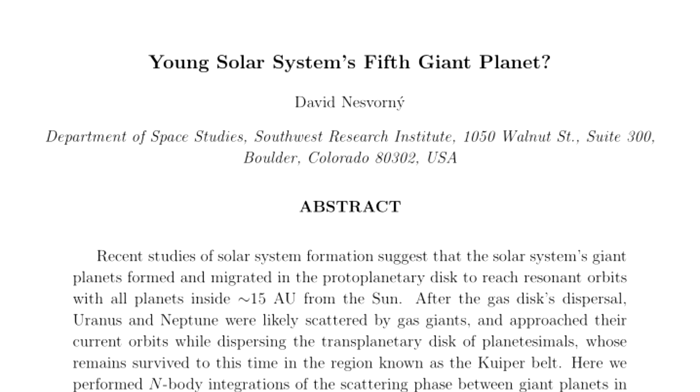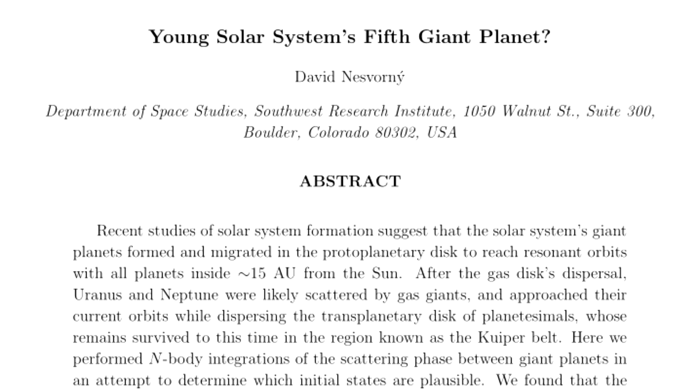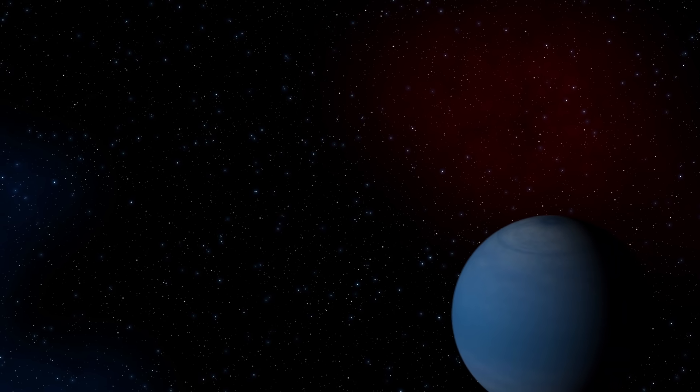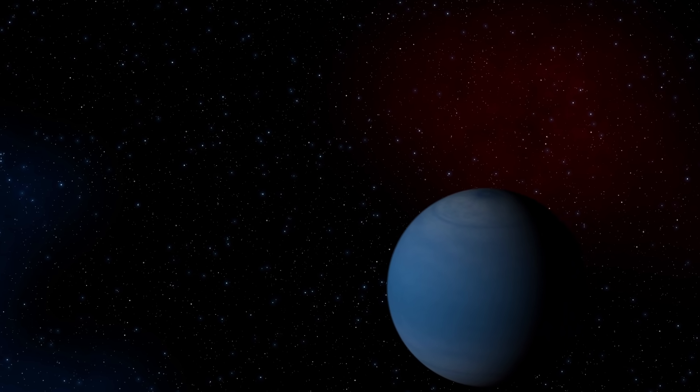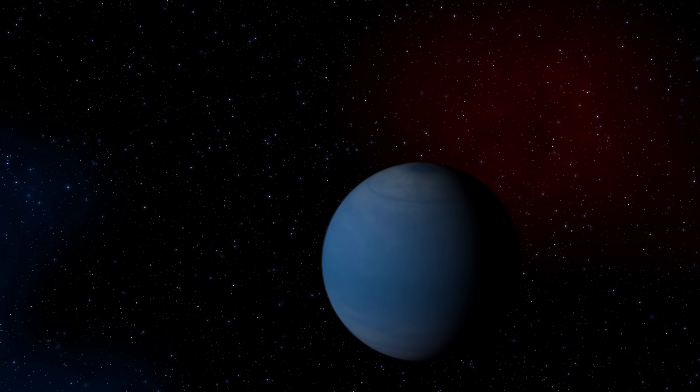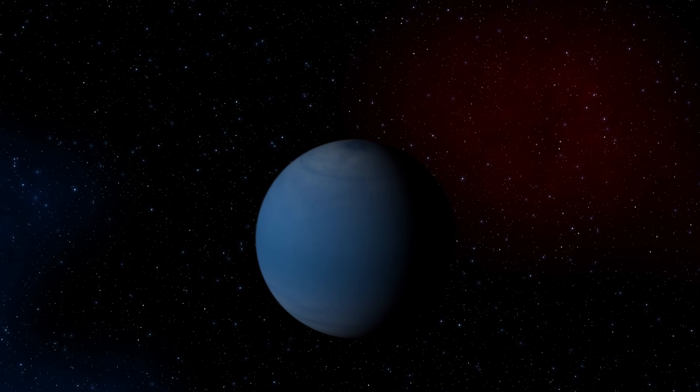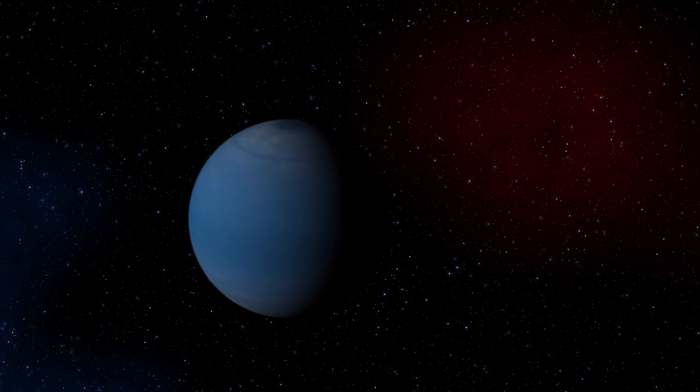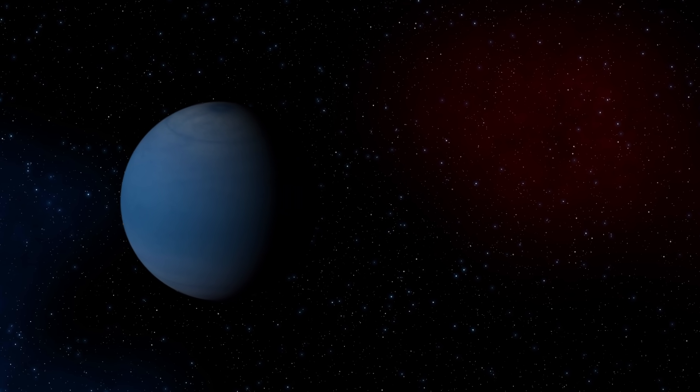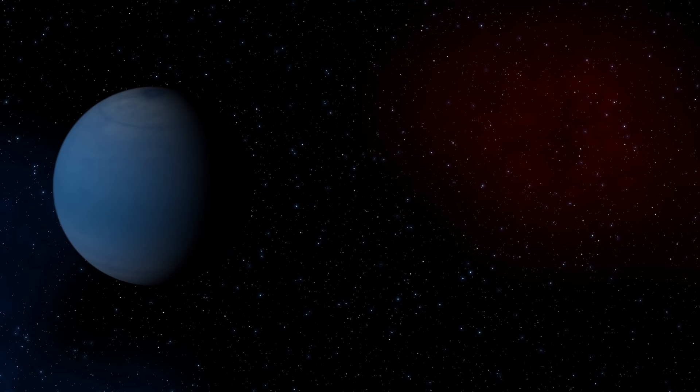David Nesvorny from the Southwest Research Institute in Boulder, Colorado had an idea. In 2011, he published a paper describing how the planets could have moved, in which he made the assumption that there must have been another planet involved somewhere, possibly between Uranus and Saturn. A gas giant very similar in mass to Neptune and Uranus, which had interacted with the other planets to bring about the current situation.